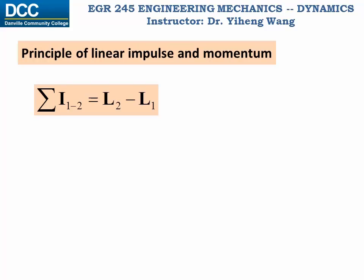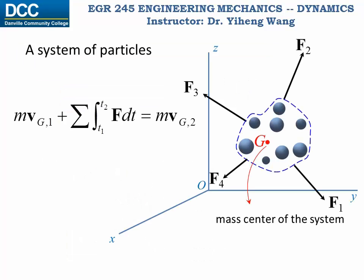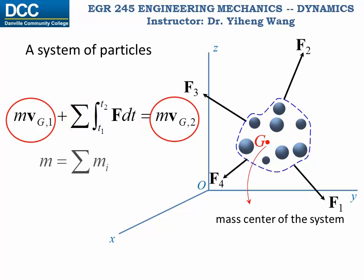The principle of linear impulse and momentum is normally written to show a direct relation of how external forces change the velocity of a particle. Because it is a vector equation, it can be rewritten into three scalar equations along the x, y, and z directions. The principle can also be applied to a system of particles, where m is the total mass and vg is the velocity of the mass center.